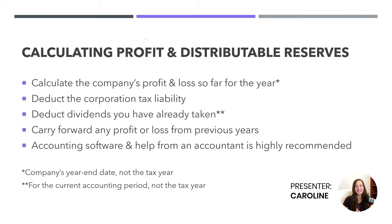Let's get into calculating profit and distributable reserves for a limited company. Before I start, I want to mention that having accounting software and help from an accountant is highly recommended, because you'll have a much easier time making sure you're taking out the right amount. Common accounting software we use would be FreeAgent — it's the easiest one for a UK limited company because it's specifically designed for UK companies. Alternatives include Xero, QuickBooks, and ClearBooks. Most have a free trial, so have a look, because doing this in a spreadsheet yourself requires a lot of accounting knowledge.